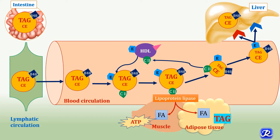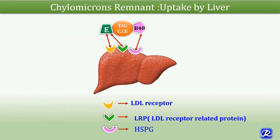The liver expresses three important receptors for clearing chylomicron remnants: first, LDL receptors; second, LRP (LDL receptor-related protein); and third, heparan sulfate proteoglycan, which is the receptor for ApoB48. The ApoE associated with the chylomicron remnant can bind to both LDL receptors and LRP, while ApoB48 binds to heparan sulfate proteoglycan, and the entire chylomicron remnant is taken up by the hepatocyte.